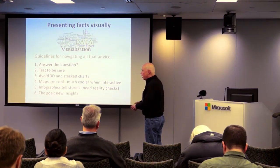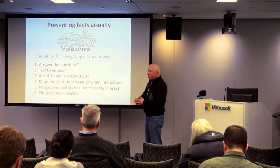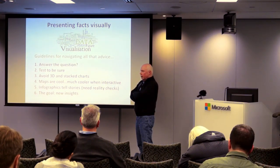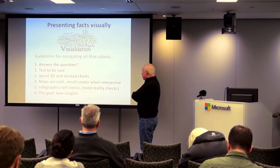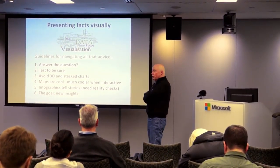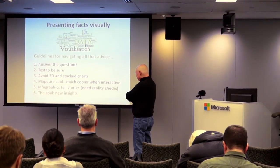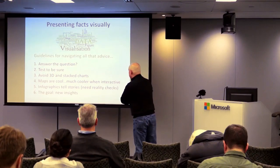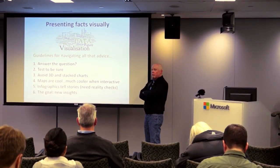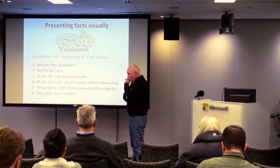Test to be sure — try it out among an inner core of your constituents and co-workers, but test with a variety of audiences. Avoid 3D and stacked charts — they don't come off well, and they definitely don't come off well online. Maps are cool, but they're really cool when you can make them interactive. I'm a big fan of maps, particularly if your work is geographically oriented — you really want to use maps to show figures and results. But there's a downside: you're telling a story and you better have your facts straight because infographics are very easy to challenge. So you need reality checks — make sure you have fact checkers checking the information. The goal for any good infographic is new insights.